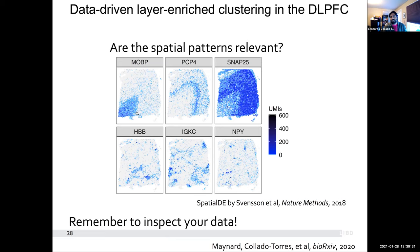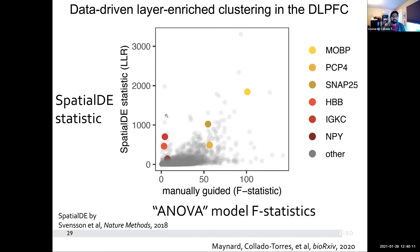Here's a caveat: you can find genes that have a spatial pattern — like MOBP, which is a white matter gene, or PCP4, a layer five gene. But you can also find genes like HBB and MYH that have spatial patterns. However, these actually seem to correspond to blood flow — they're not really the genes you might be interested in and don't have a strong relationship to cell types. They just reflect where blood is flowing in the brain in this particular slice. In this plot, the y-axis shows the spatial statistic and the x-axis shows the ANOVA model. Some genes don't have as strong a signal from the ANOVA model but do have a very strong spatial signal — and those are the blood genes.